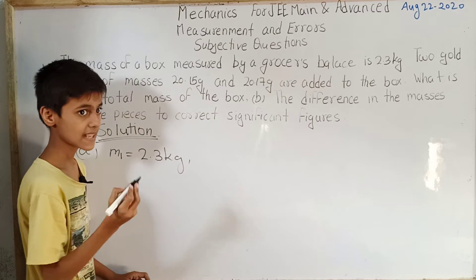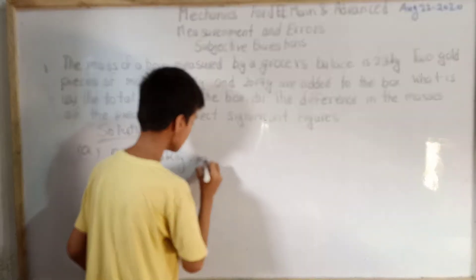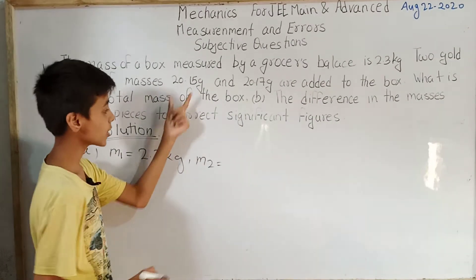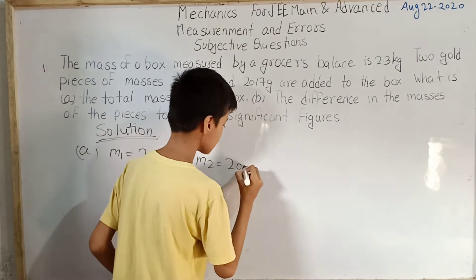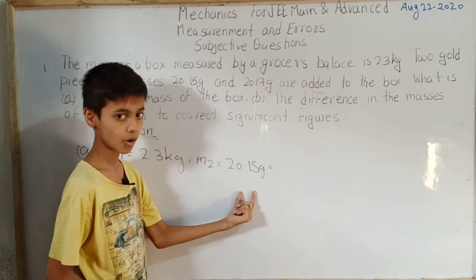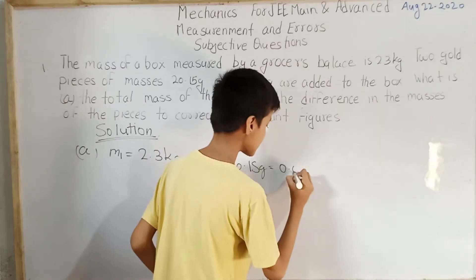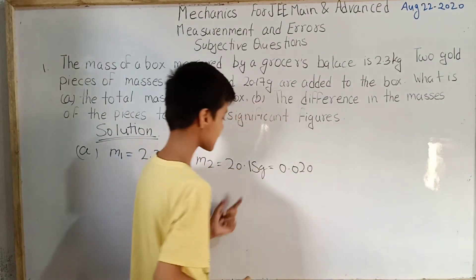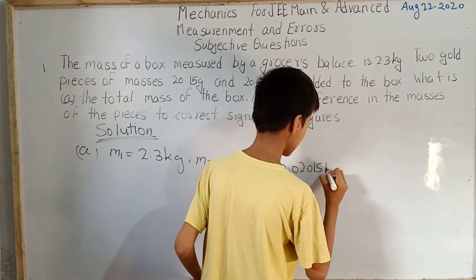Now let us take the second mass as m2. So m2 equals to 20.15 grams, which is 0.02015 kg when we convert it.